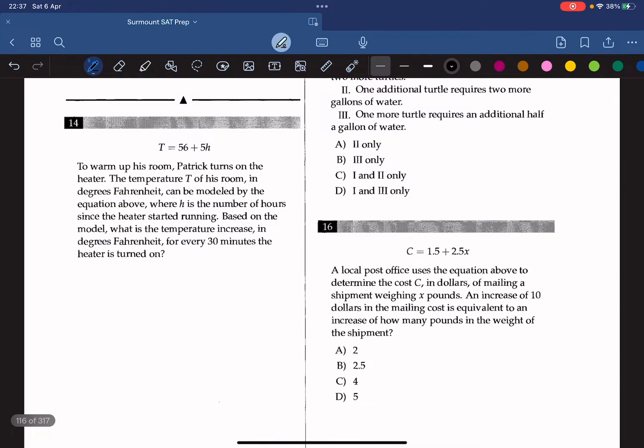To warm up his room, Patrick turns on the heater. The temperature T of his room in degrees Fahrenheit can be modeled by the equation above, where h is the number of hours since the heater started running. Based on the model, what does the temperature increase in Fahrenheit for every 30 minutes the heater is turned on? Here we know that the slope of the equation is five, so it means that the temperature must go up by five every hour, five degrees every hour. So every half an hour, the temperature should be going up by 2.5. So the answer is 2.5.